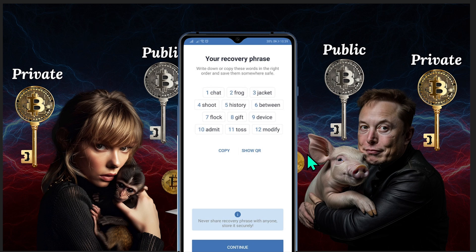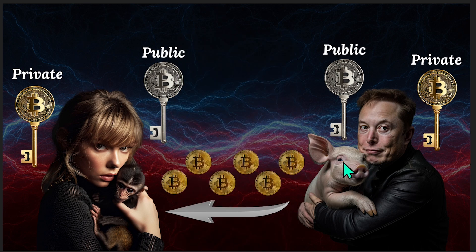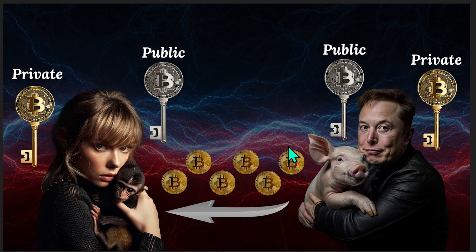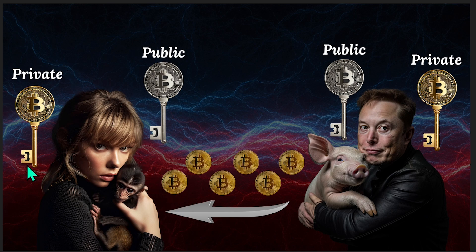For the purpose of this video, here is the simplified process: Elon Musk created a transaction using Taylor's public address; then Elon's wallet signed the transaction with his private key; the transaction was then broadcast to the Bitcoin network; the network verified the transaction to make sure it's a valid signature and that sufficient funds were in Elon's account; then the miners confirmed the transaction by adding it to the blockchain; and then Taylor Swift's wallet updated to show that she received the Bitcoin.